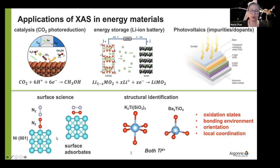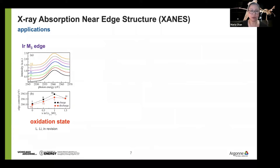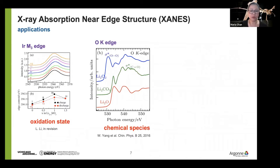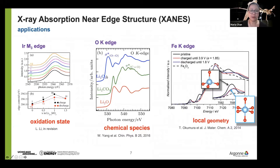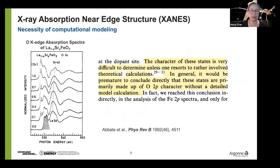I'm going to focus my talk on XANES — X-ray absorption near edge structure. We look at several edges spanning the energy range from soft X-ray oxygen K-edge to very hard X-ray 3D transition metal K-edge. These give you information about oxygen state, chemical species, as well as local geometry.